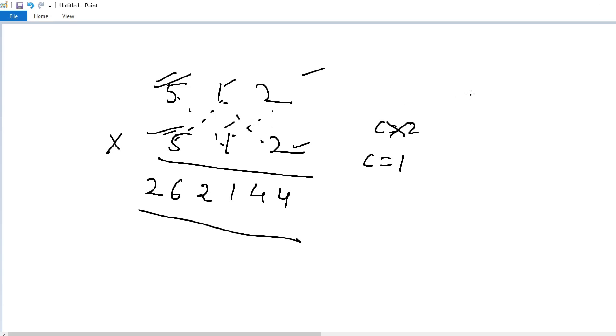And last example, 876 square. 876 into 876. First step, 6 into 6, 36, carry 3. 7 into 6, 42 plus 6 into 7, 42. 42 plus 42, 84 plus 3, 87. Now carry is equal to 8.